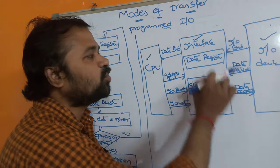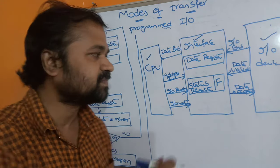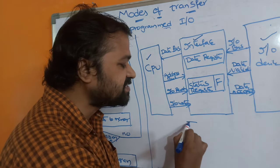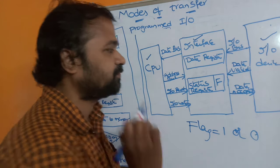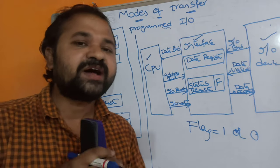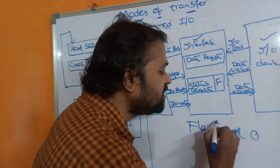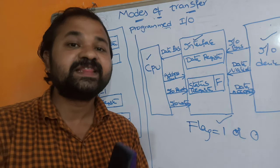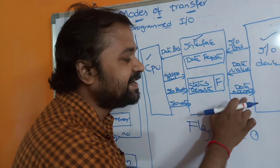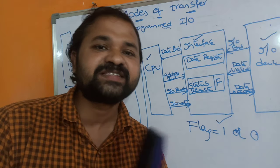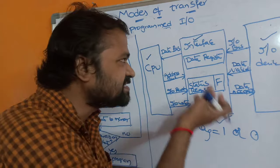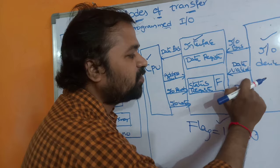Now let us consider the interface. In the interface, mainly two types of registers are used: the data register and the status register. In the status register we maintain a flag bit — F stands for flag bit. The value of the flag bit may be either 1 or 0. The information which is present in IO bus will be placed in the data register. Once the data register contains some information, the flag bit value will be set to 1, which specifies that some information is present in the data register. Whenever the flag bit is set to 1, the interface enables the data accepted line. This is just like an acknowledgement — the interface is telling the IO device that it received the data.